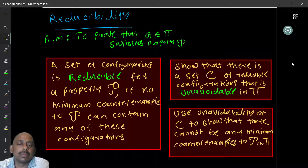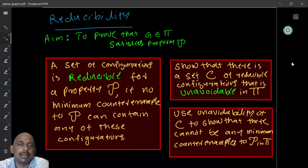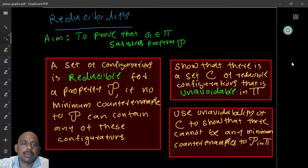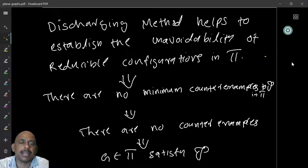If there is a counterexample, there is a minimum counterexample — you look at all possible counterexamples and find the one with minimum size. So if you show a reducible configuration is unavoidable, you have proved the property must be true for the class. The idea of discharging is precisely to show that a set of reducible configurations is unavoidable. The discharging method establishes unavoidability; reducibility must be shown separately.